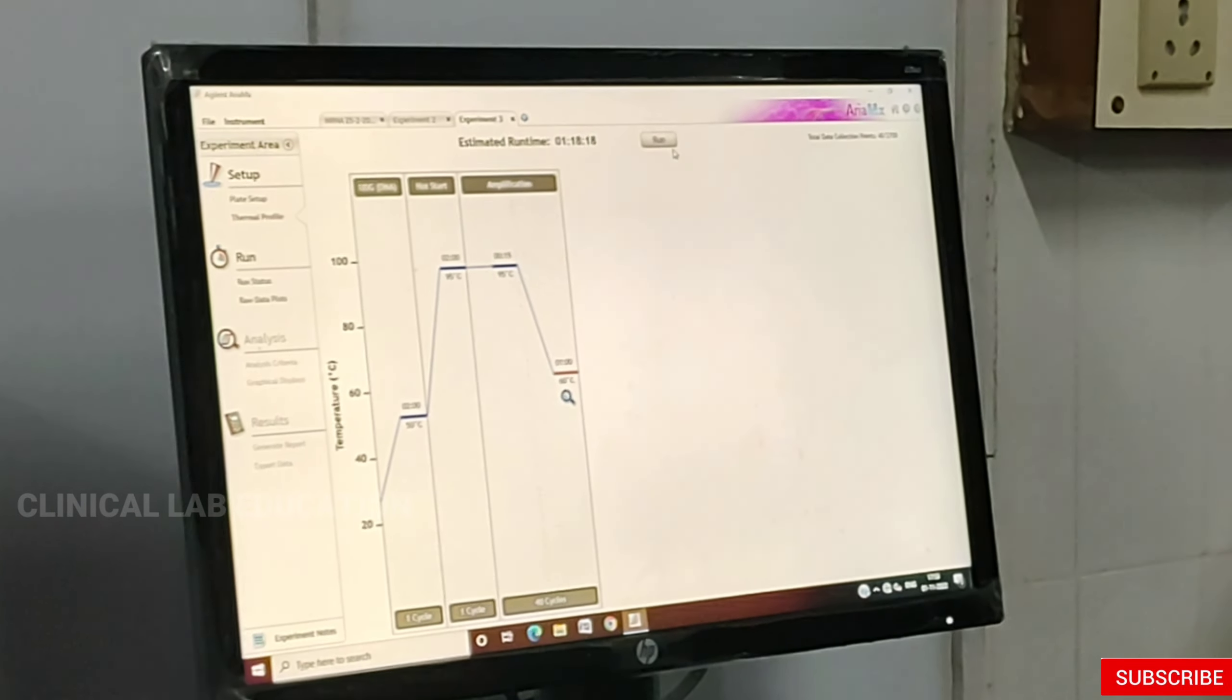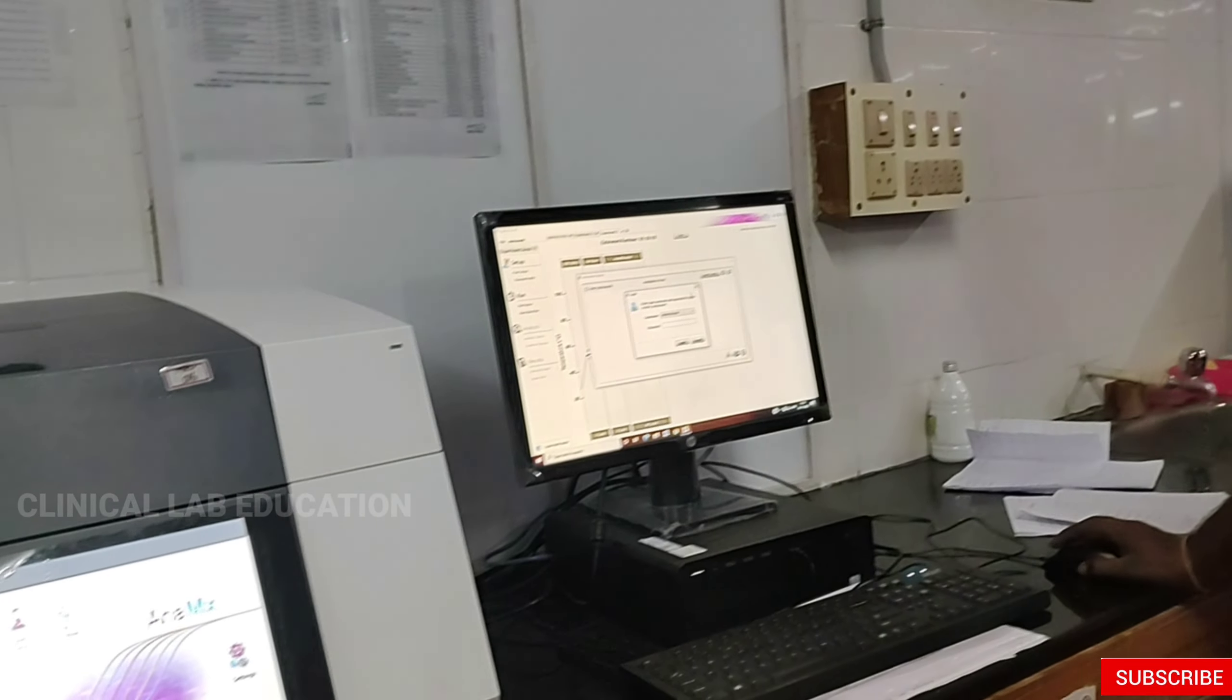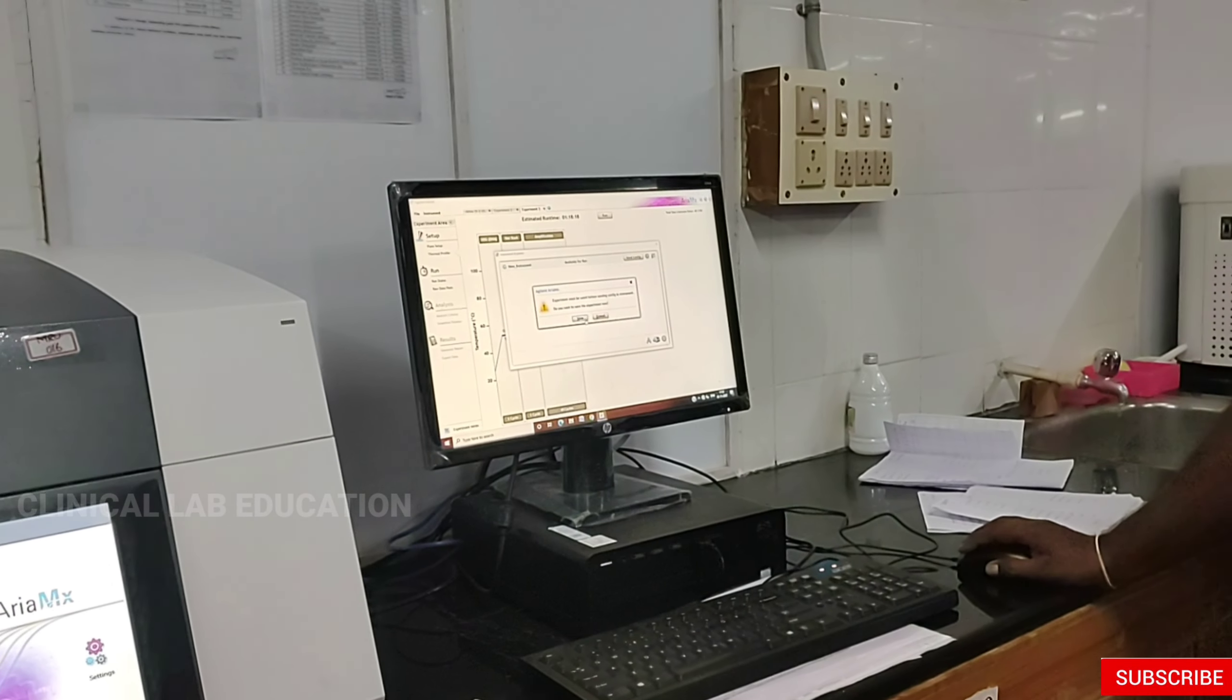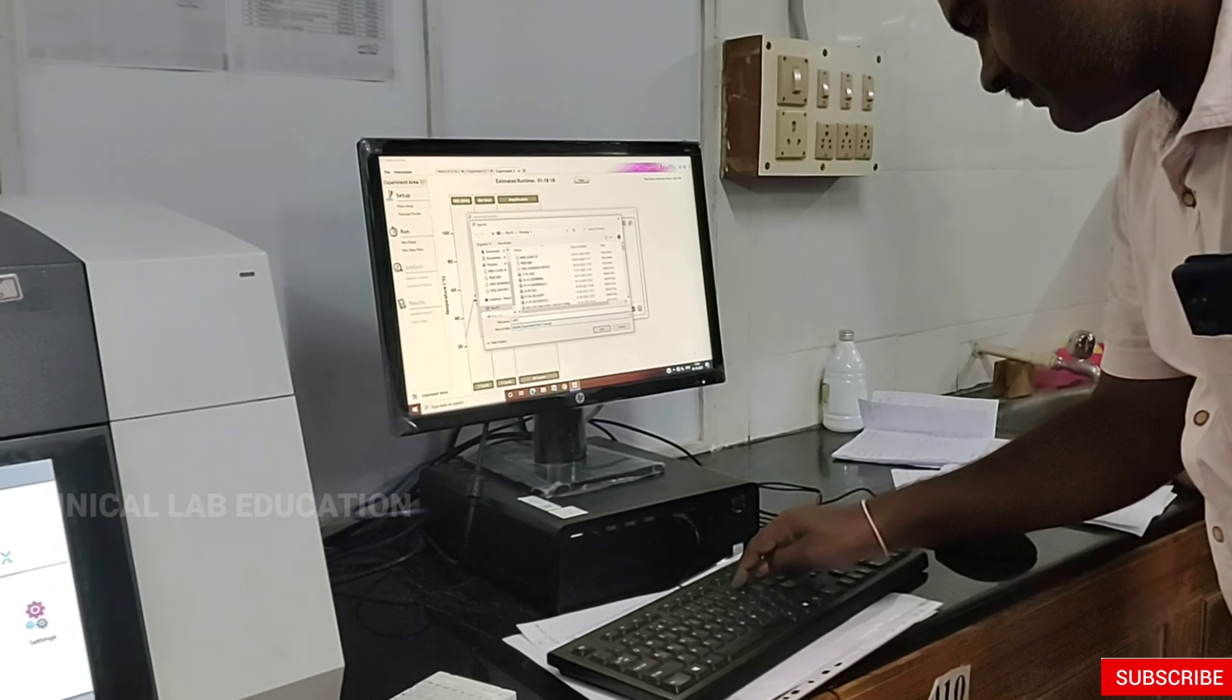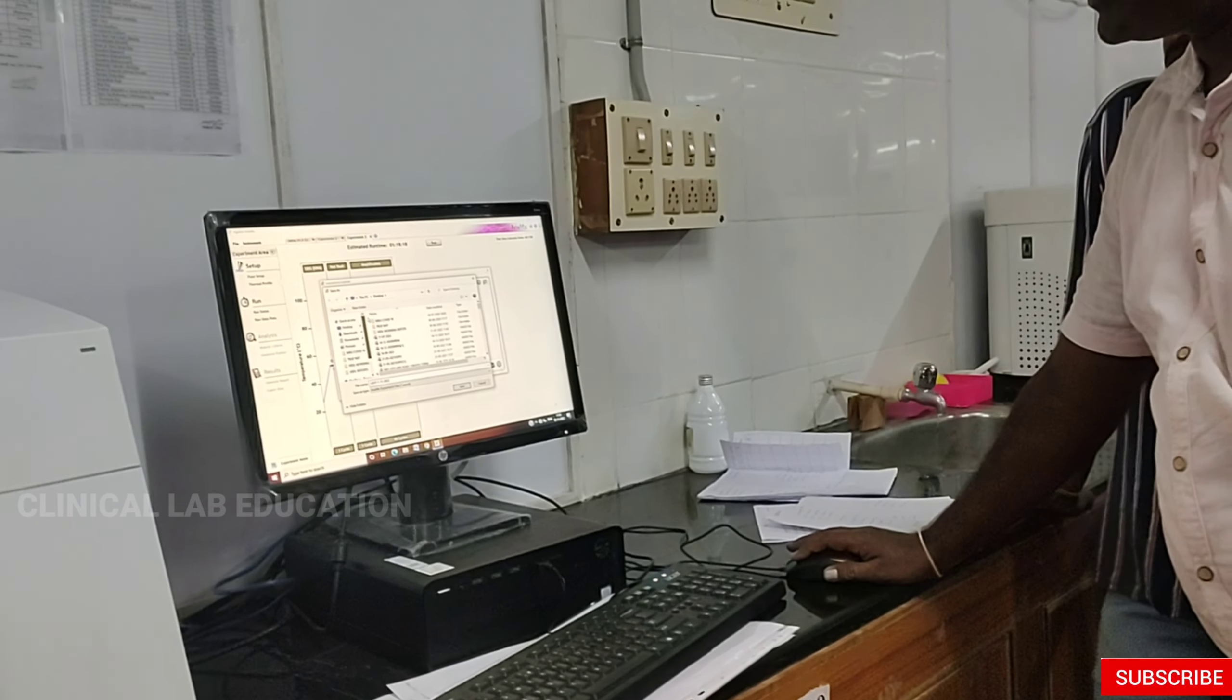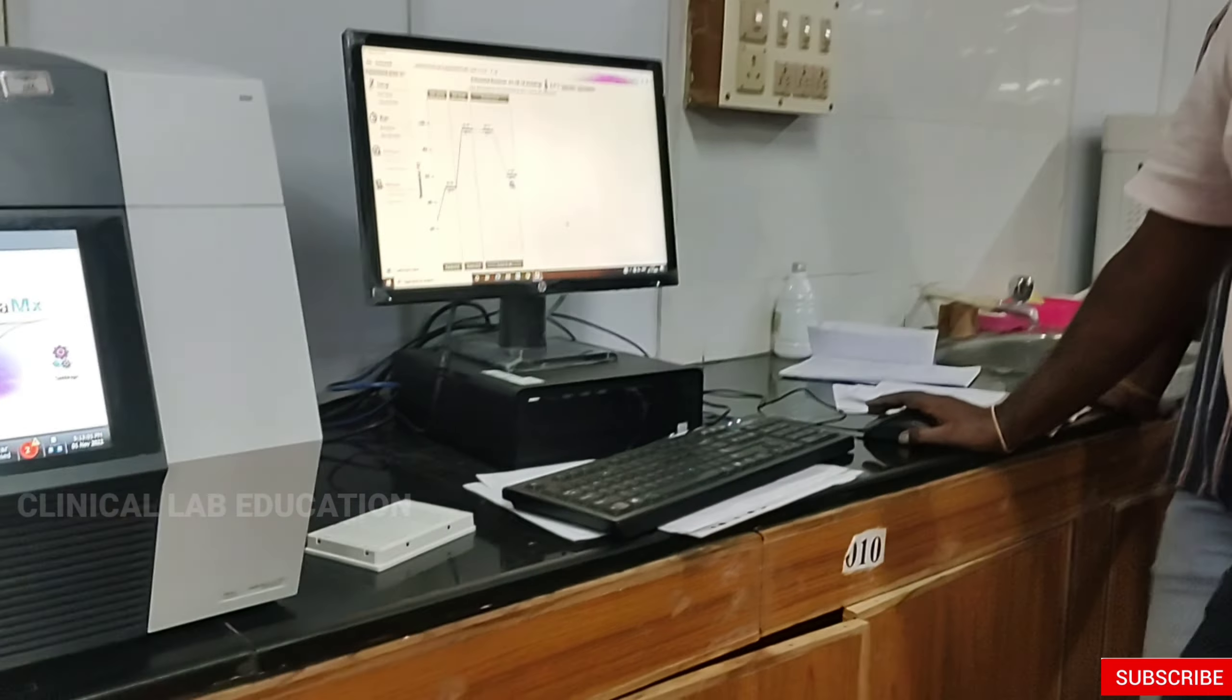After this, you need to go for run. This will send the configuration to the system. A password may appear - just go for save. Save the experiment. You can keep the time or the name of the gene, and go for save. The experiment is saved in the desktop folder - that is very important to keep in mind.